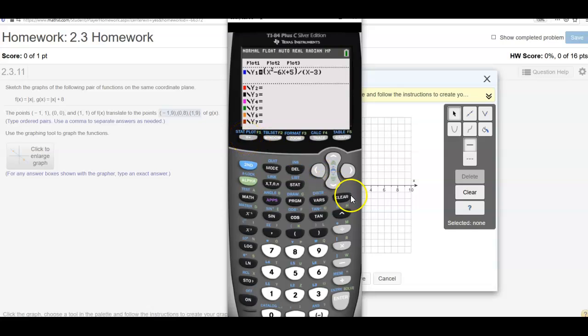So my y1 function, clear this out, is going to be that first one. It's going to be the absolute value of x. So I'm going to go here, under math, number, that's my absolute value function. So I'm going to do absolute value, and now I'm going to put x in there, and that's the first function.